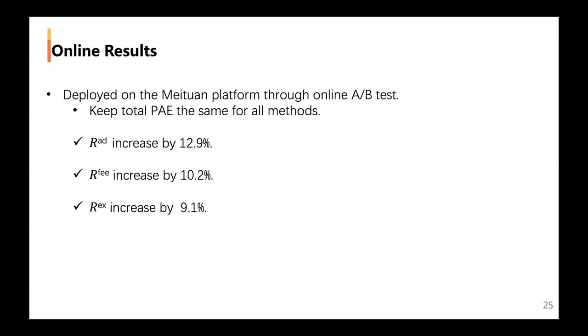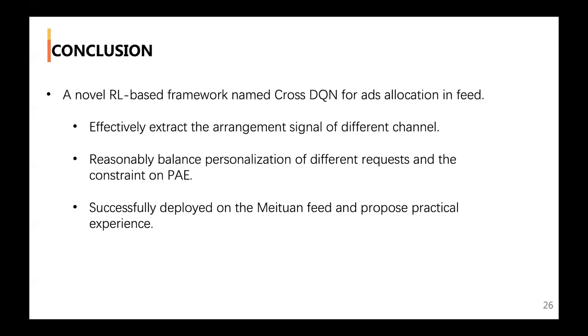We compare the Cross-DQN with fixed slots, fixed strategy, and rule-based approaches deployed in online A/B tests. We keep the total PAE the same for all methods for fair comparison. As a result, we find that the ads revenue, refill, and user experience improved by 12.9%, 10.2%, and 9.1%.